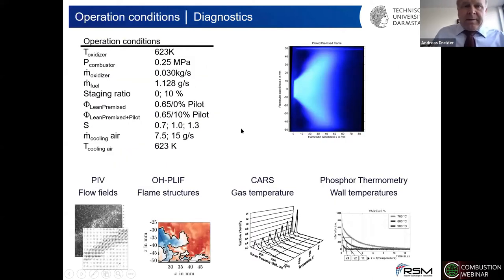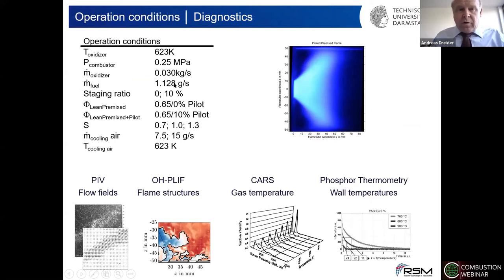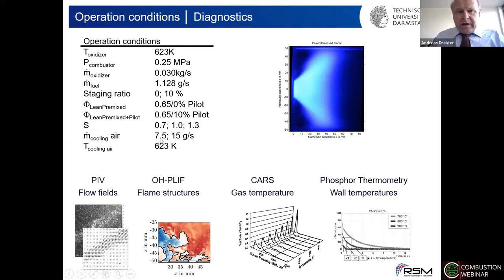For the selected condition, combustion air and cooling air were both at 623 K, system operated at 2 bar, either with or without pilot. In the lean pre-mix case without pilot, 10% of the fuel was injected centrally in the piloted case. Swirl numbers were varied between 0.7 and 1.3, and the cooling air mass flow was changed from 7.5 to 15 grams per second. We looked into the flow field by PIV, flame structures, gas temperatures, and wall temperatures using phosphorthermometry.